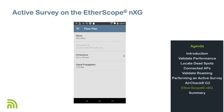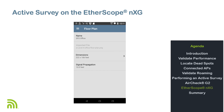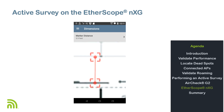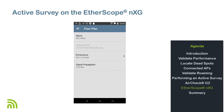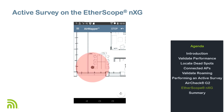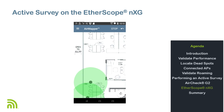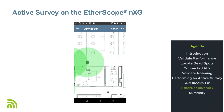Load the floor plan (either JPEG or PNG), calibrate the floor plan, set the signal propagation distance, move to the starting location, and tap Start. As you walk around the facility, tap the screen at your current location and ensure the circles overlap. Tap Stop when you've completed the survey. To upload the survey data to LinkLive, tap the Upload icon in the upper right corner of the screen.